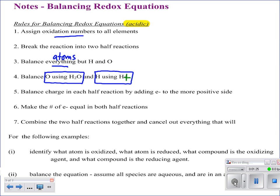Once you've got all of the atoms balanced — including oxygens and hydrogens — you need to worry about the charge. We balance the charge by adding electrons to the more positive side, just like we did yesterday. We'll need to make the number of electrons equal in both half reactions, then combine the two half reactions and cancel out everything that can cancel. Finally, we double-check by identifying what's oxidized, what's reduced, and the oxidizing and reducing agents.